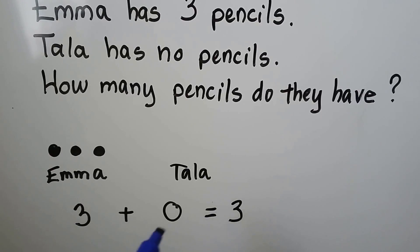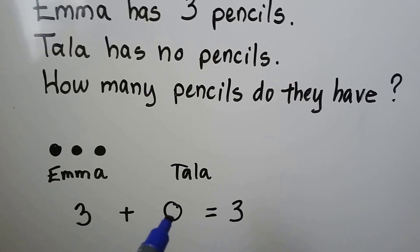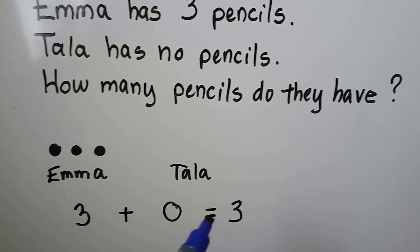Three plus zero — Tala has zero pencils — is equal to three.